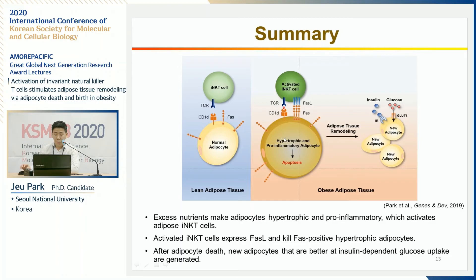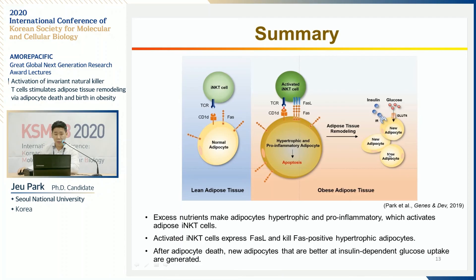This is a summary of today's presentation. Excess nutrients make adipocytes hypertrophic and pro-inflammatory, which activates adipose iNKT cells. Activated iNKT cells express FasL and kill Fas-positive hypertrophic adipocytes. After adipocyte death, new adipocytes are generated. Although I could not present the full role of new adipocytes due to time limitations, new adipocytes show better insulin-dependent glucose uptake compared to hypertrophic pro-inflammatory adipocytes, contributing to the regulation of glucose homeostasis in obesity.